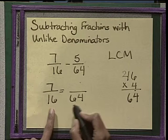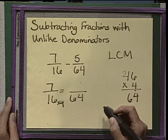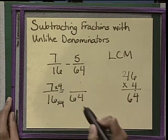Okay? So we know that we multiply 16 times 4 to give us 64. We must also now multiply the numerator by the same number. 7 times 4 is 28.